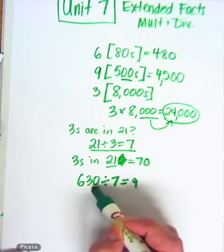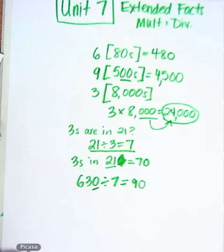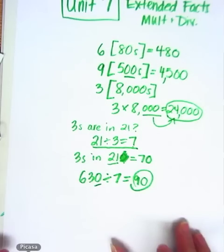And then since we covered that zero, we've got to put it back on the answer. And tag the zero on. Your answer is ninety. Let's do one more. That's a little bit harder.